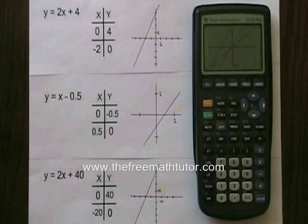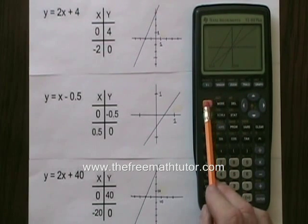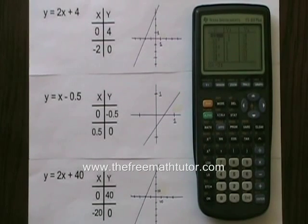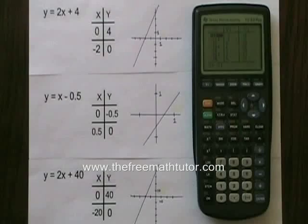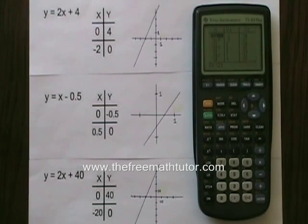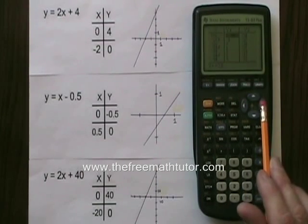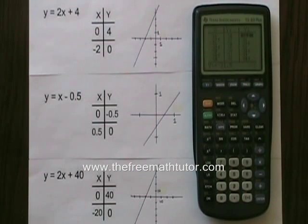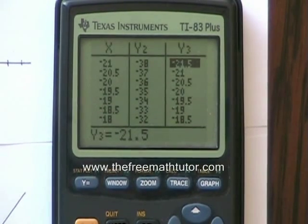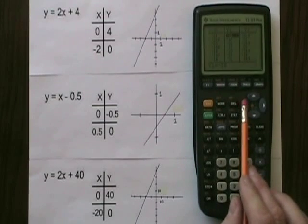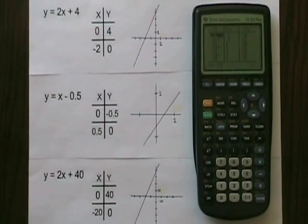If I want to see all three tables of values at once, I do second graph to see the table. And as you can see, I have a single x column in my table and I have y1 and y2 columns. The y columns are showing for the first and second equations that are entered. If I want to see the third one, I have to hit the right arrow a couple of times. Now I can see the third one. I can't see the first one anymore. The calculator keeps on showing the x column. I can go back and forth to see any of my tables anytime I want.